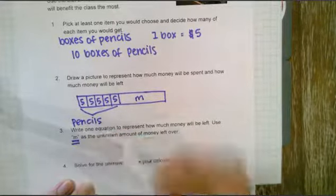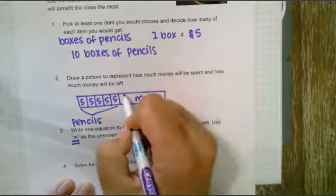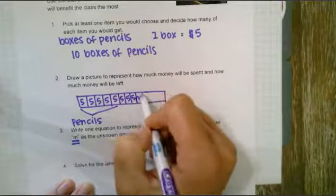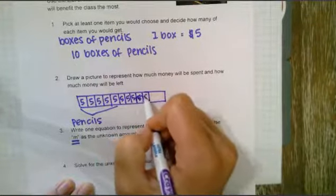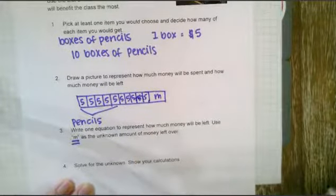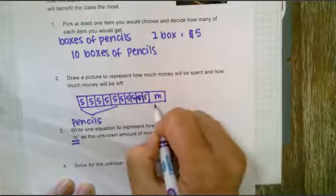Oh shoot, sorry I only drew five, I meant to draw ten. One, two, three, four, five. Sorry about that, I got ahead of myself. There are my pencils and then here's my money left over.